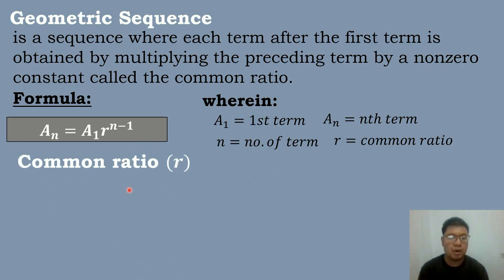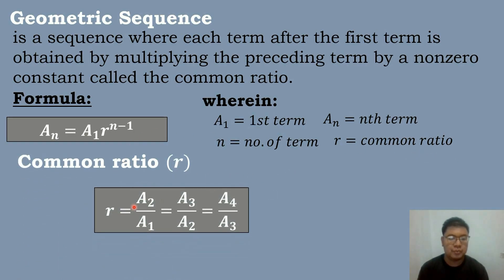R is equal to the value of the common ratio. To find the value of the common ratio, we have the formula: r is equal to a sub 2 over a sub 1, which equals a sub 3 over a sub 2, which equals a sub 4 over a sub 3.